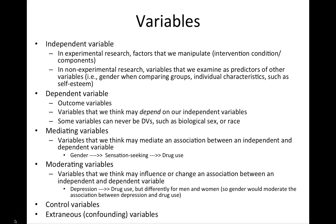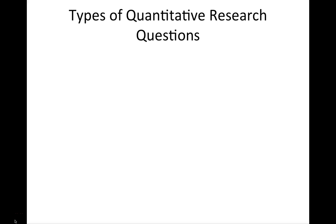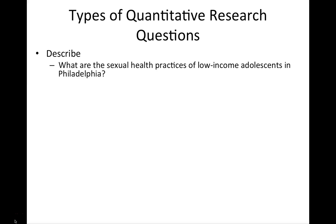Variables are really key to being able to develop a clear research question. When we talk about quantitative research questions, we can broadly break them up into three different kinds. The first are descriptive — questions where we want to describe a phenomenon. For example, what are the sexual health practices of low-income adolescents in Philadelphia? In this situation, we probably want more specification and operationalization: what counts as low income? What counts as adolescents? What are we looking at in terms of sexual health practices — HIV testing, condom use, birth control, STI outcomes? You see how specificity is really important. This may be a good broad descriptive research question, but we want to be more specific when developing an actual research question.